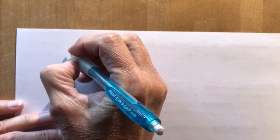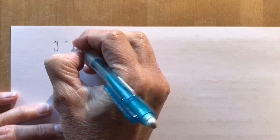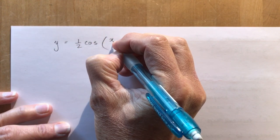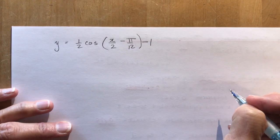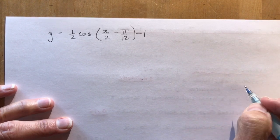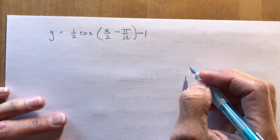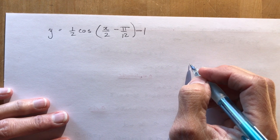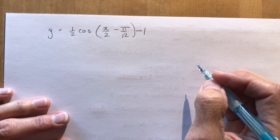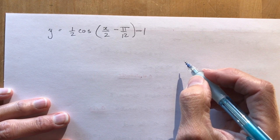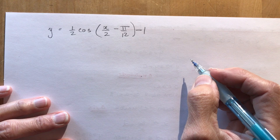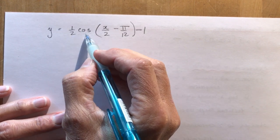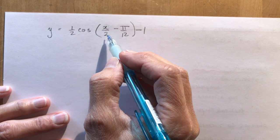Let's do an example. We're going to graph y = ½cos(x/2 − π/12) − 1, state the transformations, and figure out the mapping rule using key points. You've done this before, so you can either use key points or eyeball the function — I'll show you both methods. Right away I see that I need to factor this, since we have x/2, not just x.